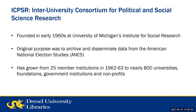A little background about what ICPSR is — besides a tongue twister if you keep trying to say it over and over again. It's the Inter-University Consortium for Political and Social Science Research. It's been around since the early 1960s, based at the University of Michigan's Institute for Social Research. It actually began to archive the data from the American National Election Studies. It started with 25 member institutes in the early 60s; now there are more than 800 universities, foundations, and so on.